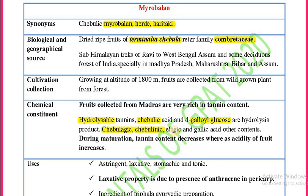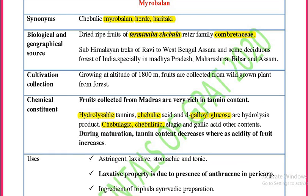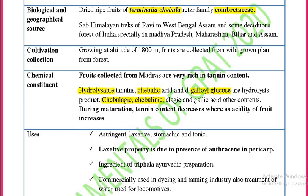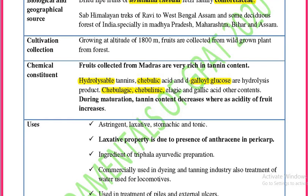Remember this important point: during maturation, tannin content decreases whereas the acidity of the fruit increases.